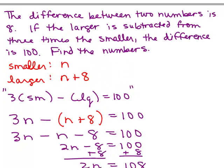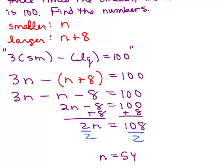Let's see, if n is 54, then the larger number is 54 plus 8, which is 62.